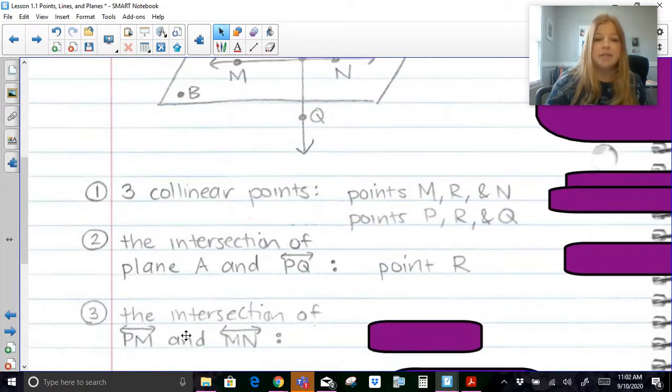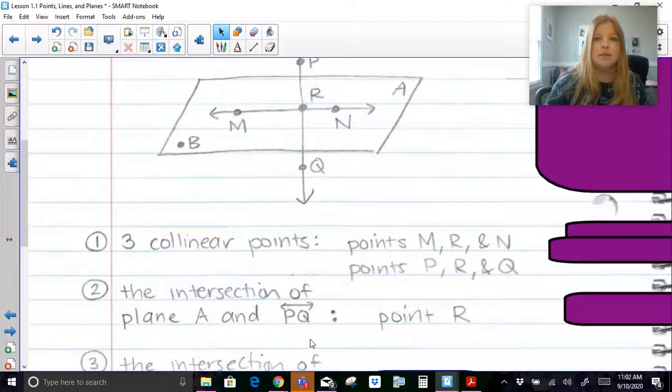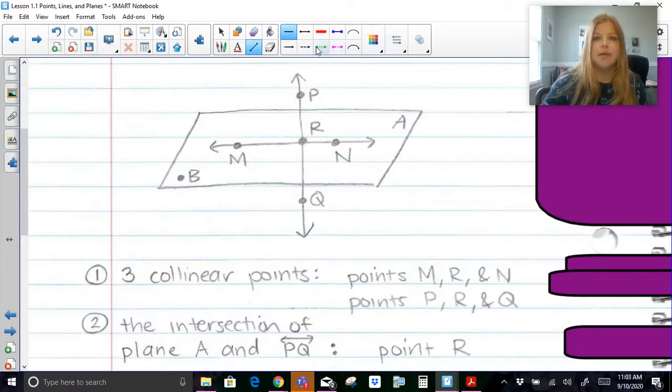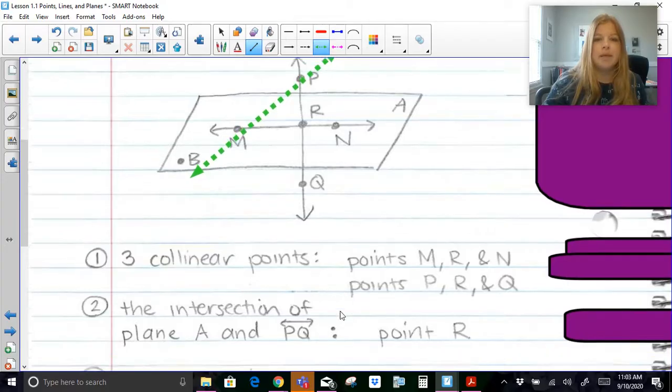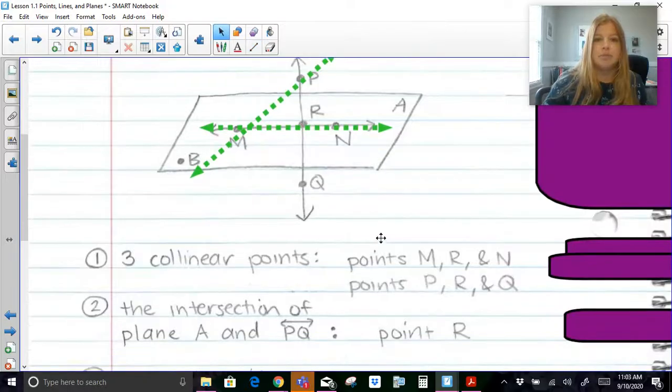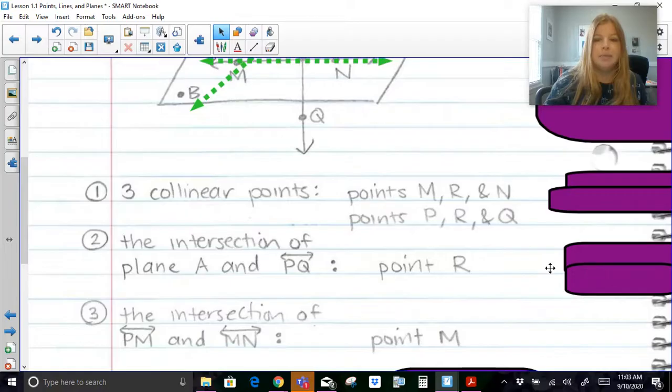The intersection of line PM and line MN. So the intersection of line PM, if I was to create a new line here, I'm going to do it right now, we should be able to see it pretty easily, point M.